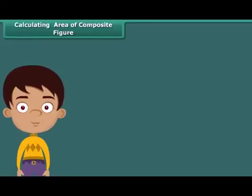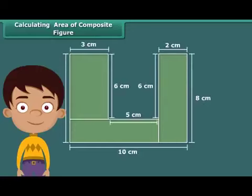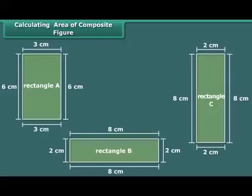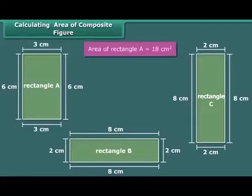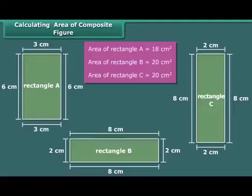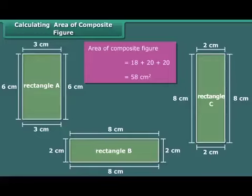Now let us calculate the area of a shape that is made up of multiple rectangles. First, break the composite figure into individual rectangles. Calculate the area of each rectangle, then sum up the areas of all the rectangles to find the area of the composite figure. Here, we can divide the given composite figure into 3 rectangles. The area of rectangle A is 18 square centimeters. The areas of rectangles B and C are the same, that is, 20 square centimeters each. Thus the area of the composite figure is 18 plus 20 plus 20, which equals 58 square centimeters.